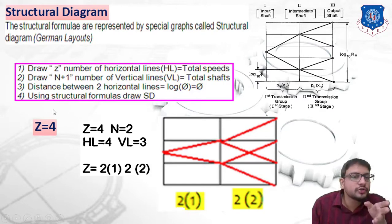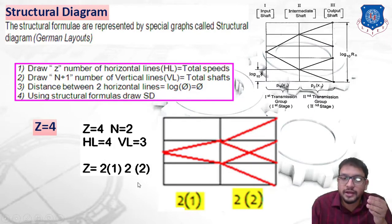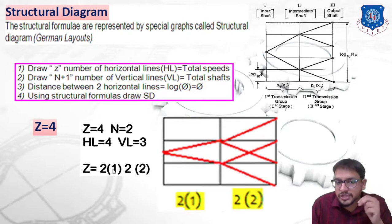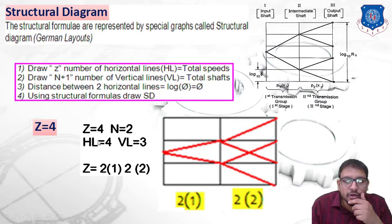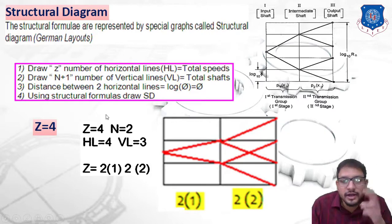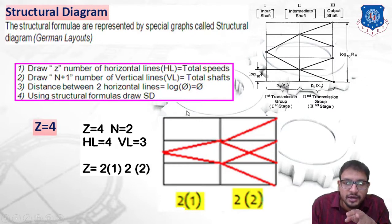Now consider a four-speed gearbox where Z equals 4. The structural formula becomes 2 raised to 1 into 2 raised to 2. This has two stages, so n equals 2. The number of horizontal lines to draw is 4, representing the number of speeds available. The vertical lines should be 3 — since there are two stages, we draw n plus 1 equals 3 vertical lines.